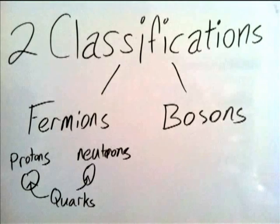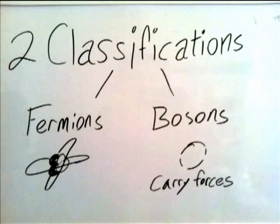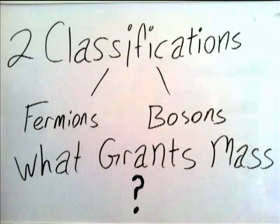A quark is an elementary particle that creates protons and neutrons through different sequencing. Bosons are particles that are created from forces, but what grants mass?